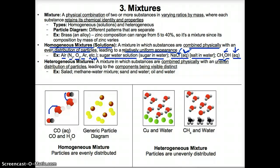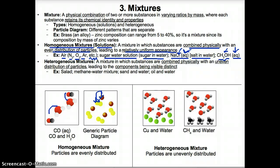A generic particle diagram of another homogeneous mixture shows two distinct patterns: one molecule with two yellow atoms attached to represent element A, and one brown atom to represent element B. That makes them a mixture since they're two distinct patterns. But since they distribute evenly and pair up in almost a one-to-one ratio, that makes this a homogeneous mixture where the particles are evenly distributed.